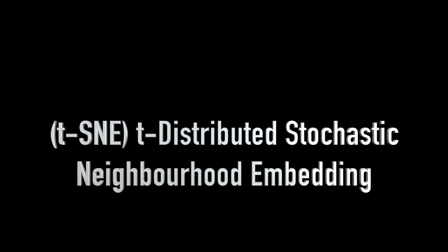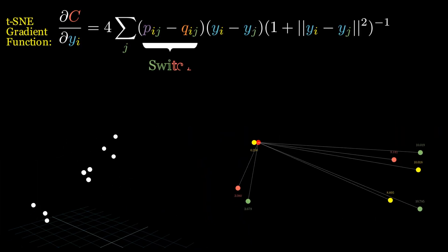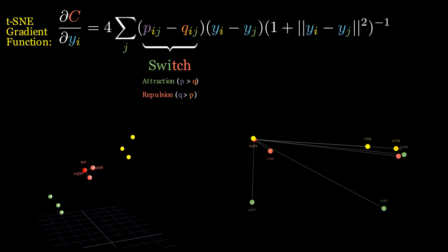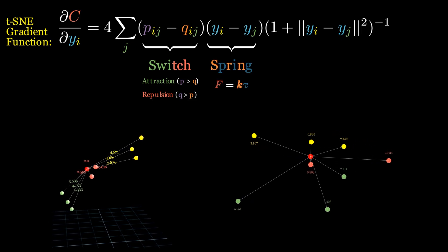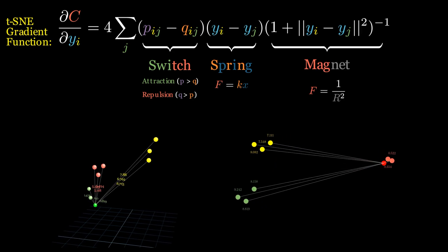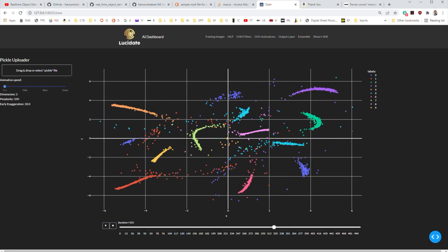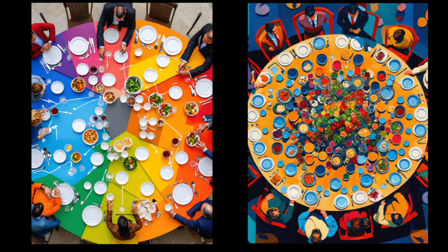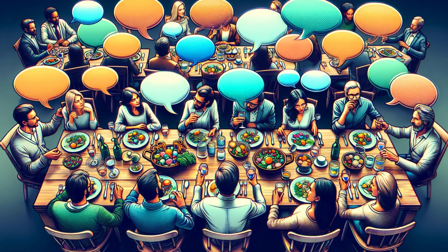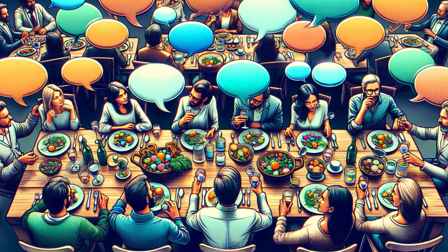T-distributed Stochastic Neighbor Embedding, or TSNE, is a non-linear dimensionality reduction technique that maps high-dimensional data into a lower-dimensional space, much like PCA. Typically it maps down to 2D or 3D while preserving the local structure of the data. It aims to place similar data points close together and dissimilar points far apart. Imagine TSNE as a party planner arranging guests at a dinner table: guests with similar interests are seated close together while dissimilar guests are kept apart, encouraging engaging conversations and minimizing awkward interactions.